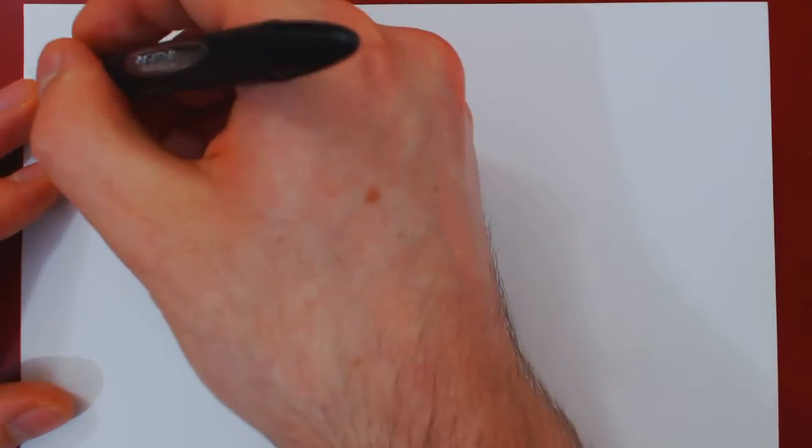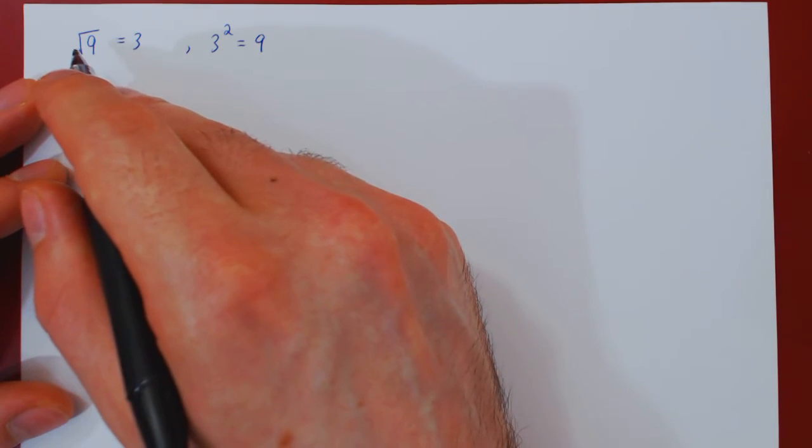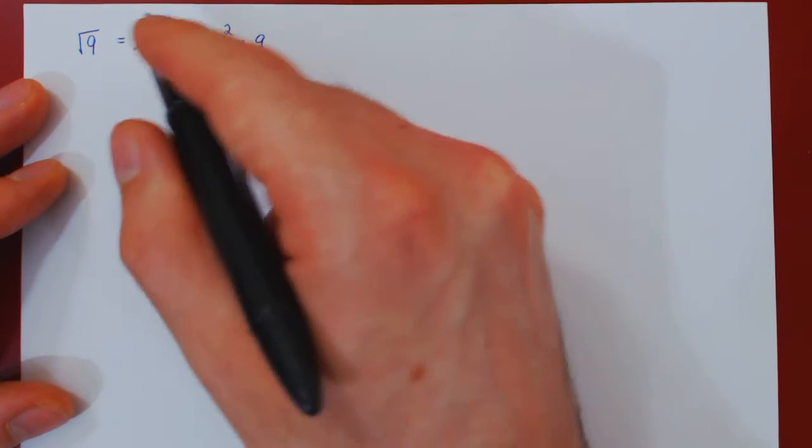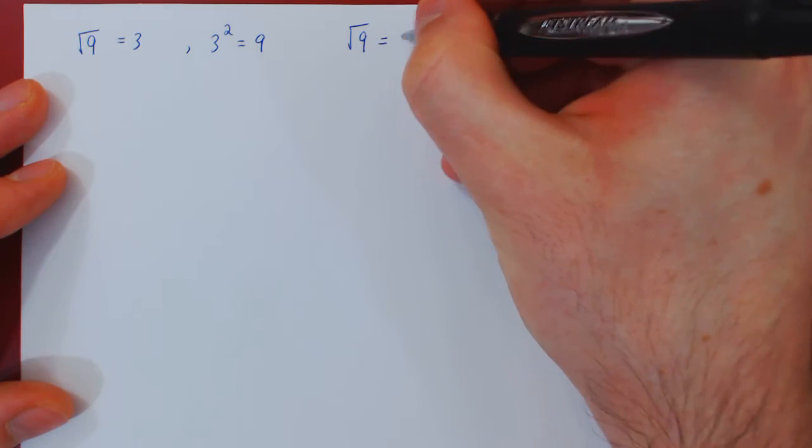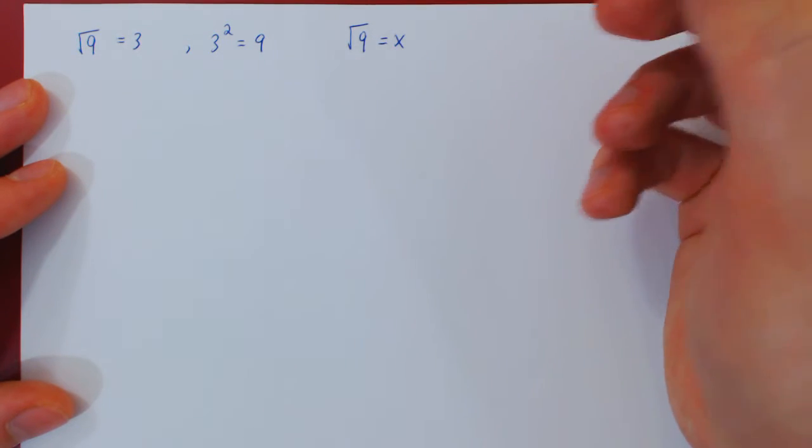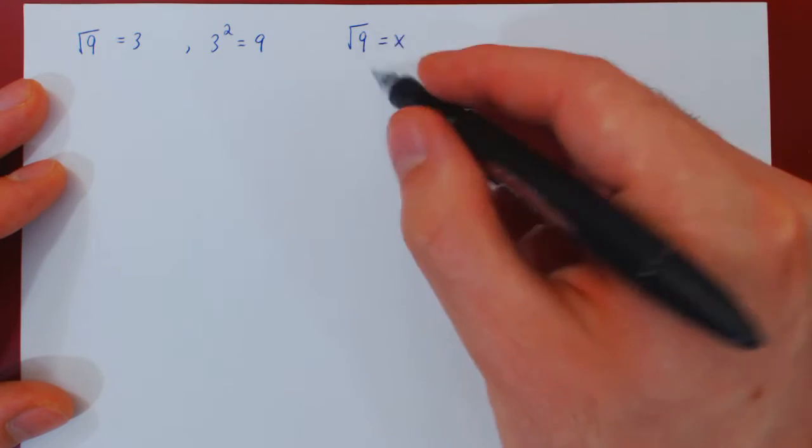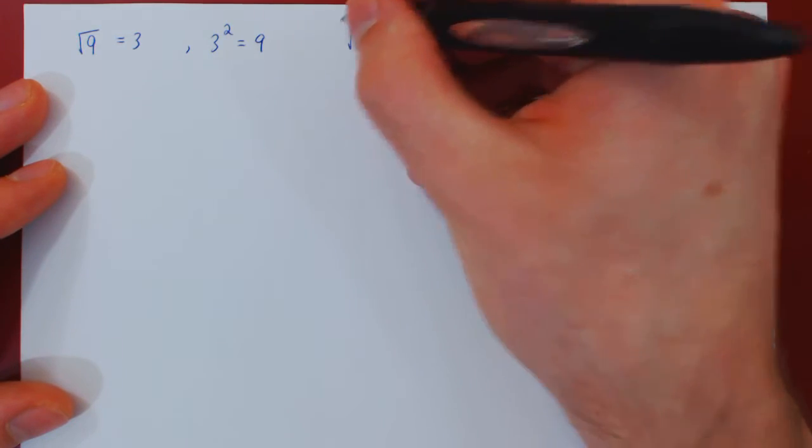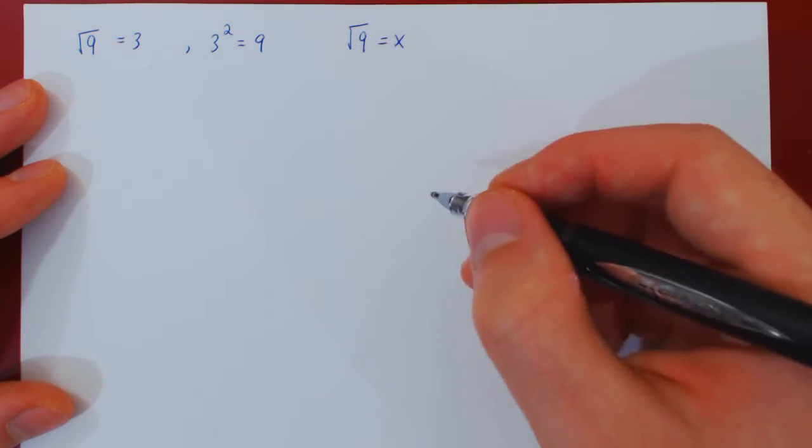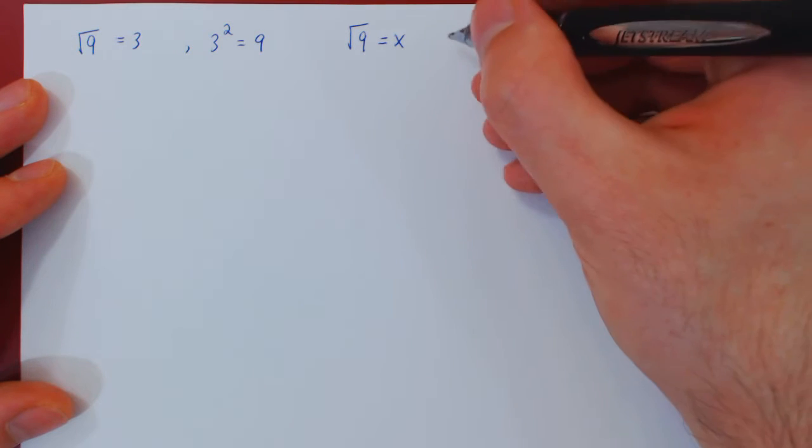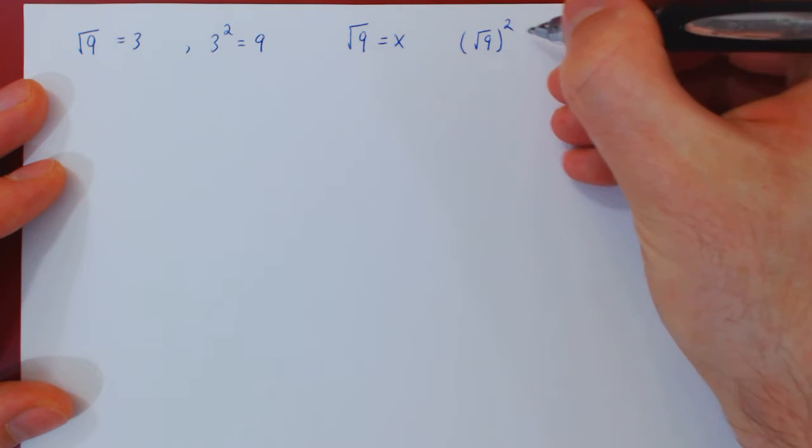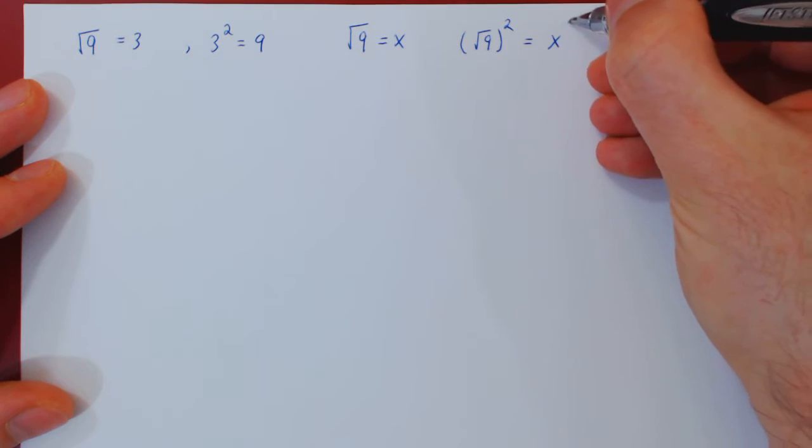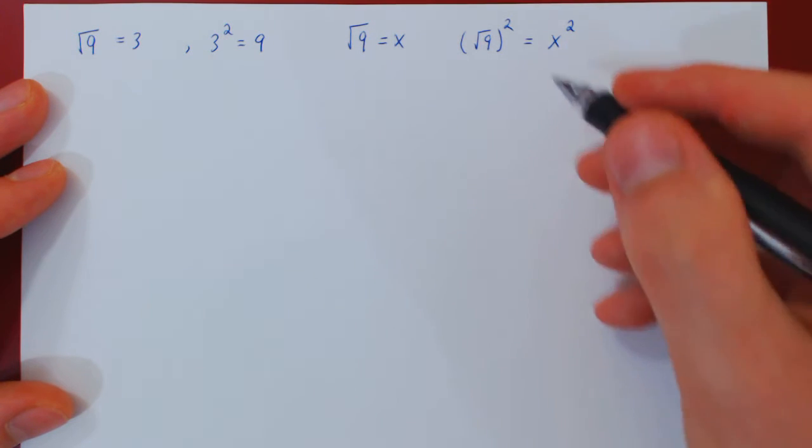You can also think of it in this way: if the root of 9 is some quantity, you say the root of 9 equals x, then you can square both sides. If this equals this, then you can do the same thing on both sides which will preserve the equality. So if you square the left hand side, this will yield the same thing as squaring the right hand side.